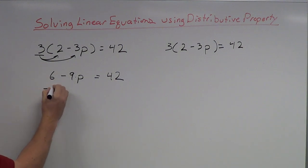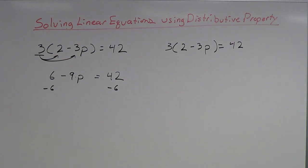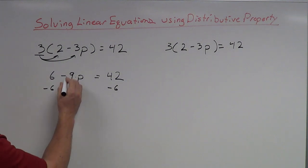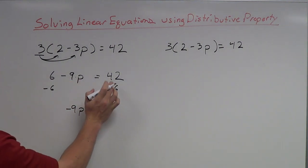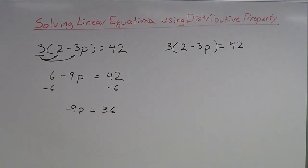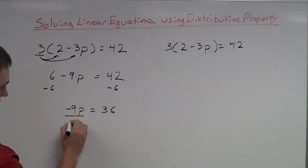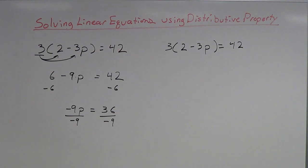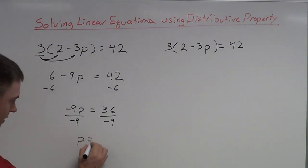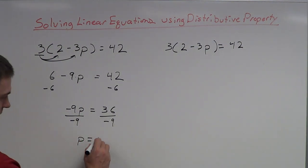Remember whenever you do anything in an equation — add, subtract, multiply, divide — you've got to do it to both sides. So subtracting 6 from both sides: 6 minus 6 is 0, the negative 9p is not affected, and 42 minus 6 is 36. The only thing left is that negative 9, which is multiplying times the variable, so I want to divide by negative 9. The negative 9's cancel, leaving just p, and 36 divided by negative 9 is negative 4.